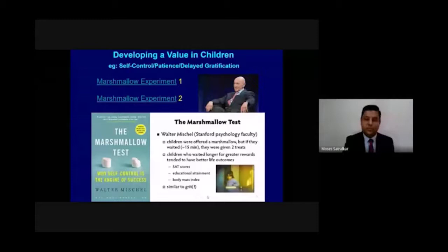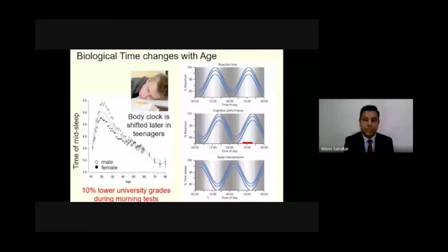Developing values in children - the marshmallow experiment, a classic experiment conducted by Walter Mischel at Stanford. They worked with children and showed how children who waited for an extra marshmallow over 10 or 15 minutes actually did better in life when tracked for 17 years. Those children who had the ability to wait got double benefits and had better SAT scores, educational attainment, and body mass index. Delayed gratification is good rather than instant gratification. This patience or self-control is a value, and when developed in children at an earlier age shows a lot of value in the latter years of life.